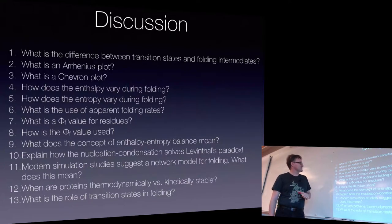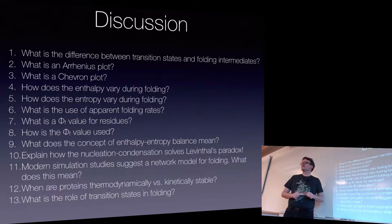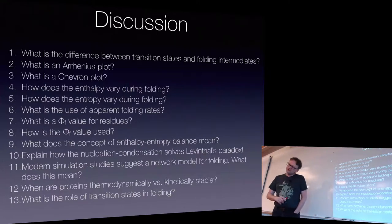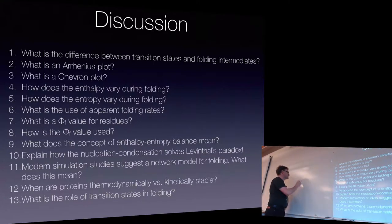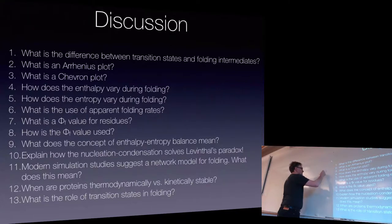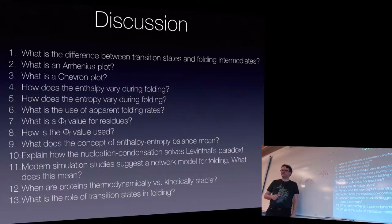Then we had the Svante — Svante Arrhenius — plots. These plot rate constants versus inverse temperature. The Arrhenius plots always try to get at this property: you have some rate constant proportional to an exponential raised to E minus delta F divided by KT. You take the logarithm of both sides to get the delta F expression, and then you plot versus 1/T or minus 1/T, and they become straight lines.